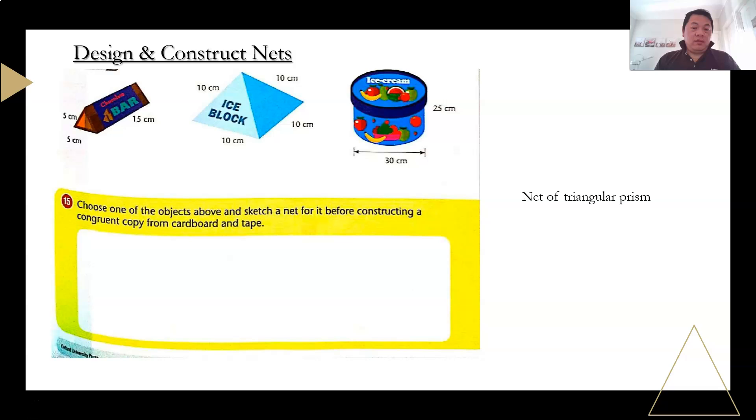So the next one. They actually ask you to design and construct. And you can do it if you have cardboard at home. By all means, you can construct a congruent copy using tape and cardboard. If you don't have, don't worry. Just draw it up. I think it will be good enough. So I'm going to show you piece by piece. Like for example, the triangular prism. Toblerone. Most of you understand what's a Toblerone chocolate bar, isn't it? So that's the net of a triangular prism. That's how it looks like. You have three rectangles and two triangles. For this case, it is an equilateral triangle. You see it's 5cm, 5cm. This must be 5cm. So equilateral triangle.